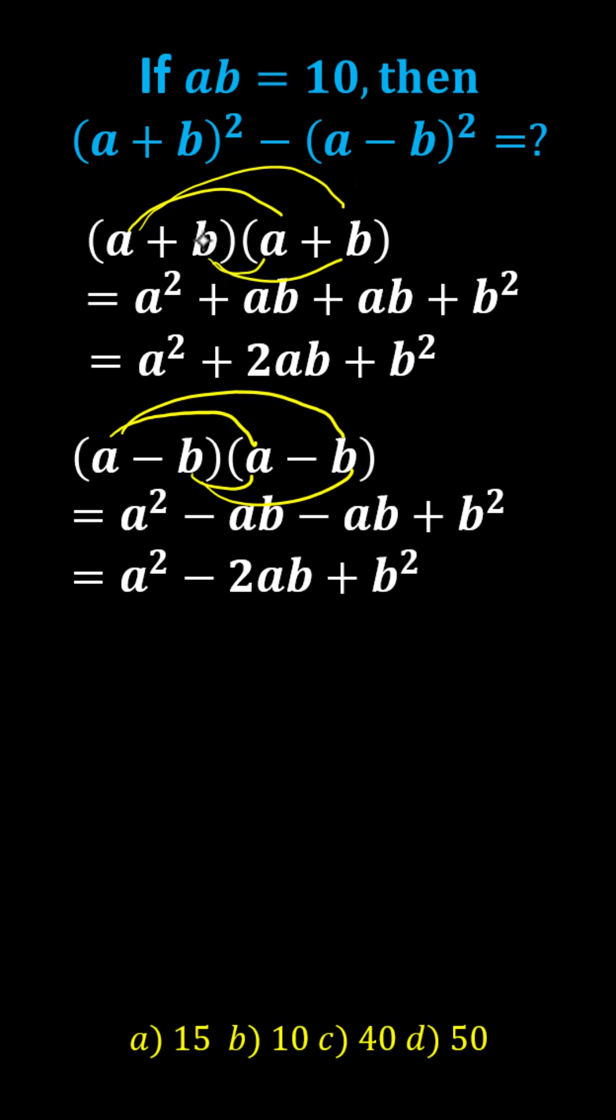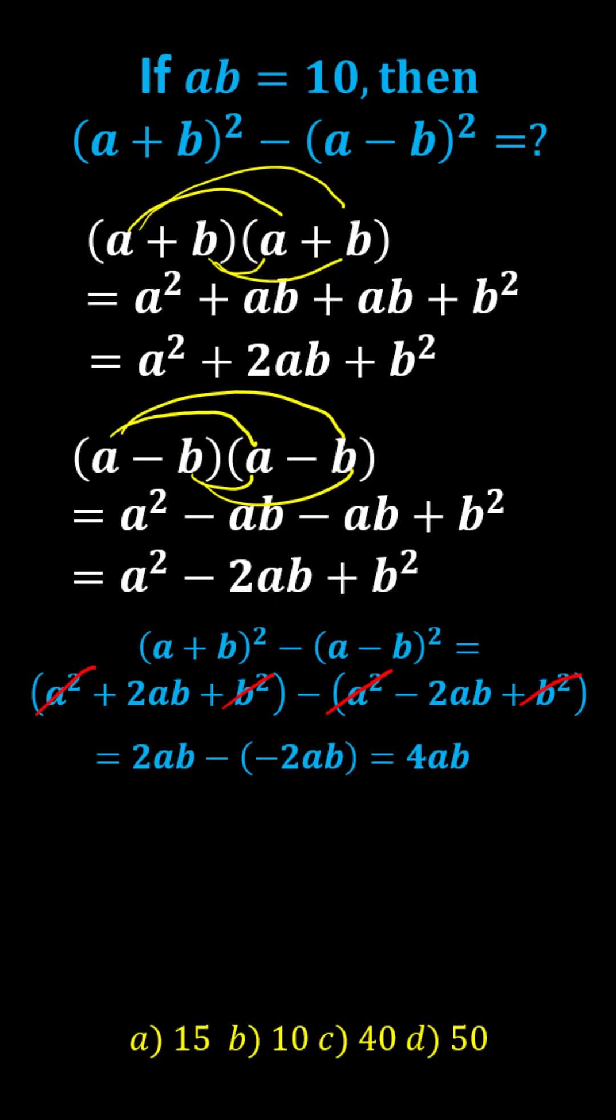And now we'll find the difference of the squares. Simplifying A squared minus A squared is zero, and B squared minus B squared is equal to zero. We're left with 2AB minus negative 2AB, which simplifies to 2AB plus 2AB, which is 4AB.